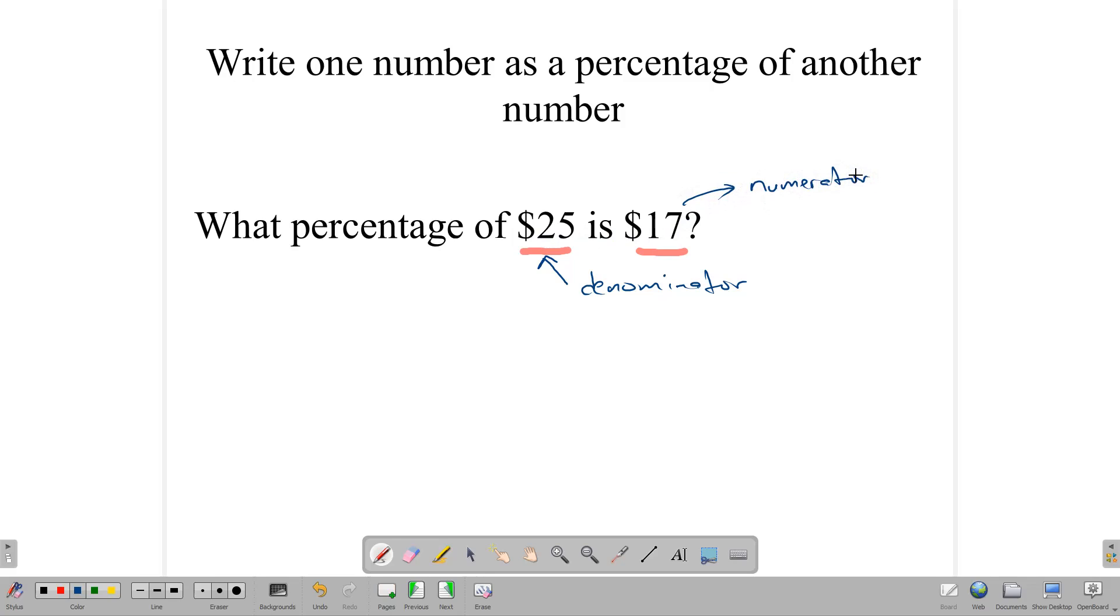So, what we do is that we set up a fraction, and we say 17 over 25, and we want to get this in percentage form. So, what we do is that we multiply by 100%, and in multiplying by 100%, notice that we can do a simple division here. And here we get 17 multiplied by 4, and 17 multiplied by 4 gives us 28 plus 40, which is 68. So, this gives us 68%. So, what percentage of $25 is $17? It is 68% of $25.